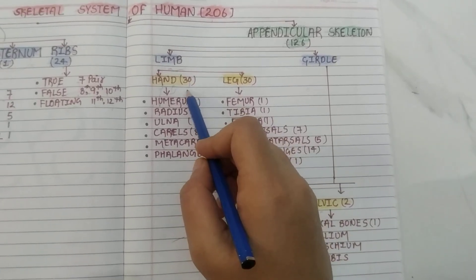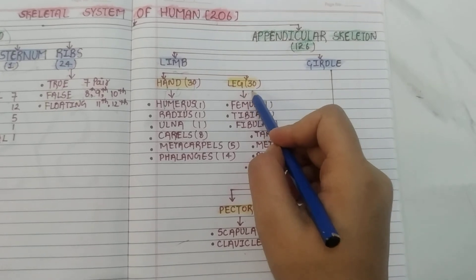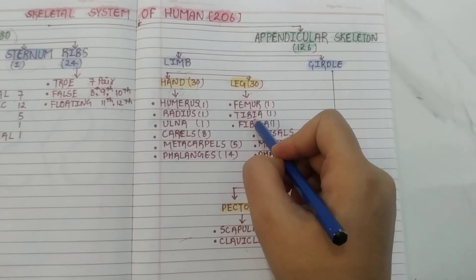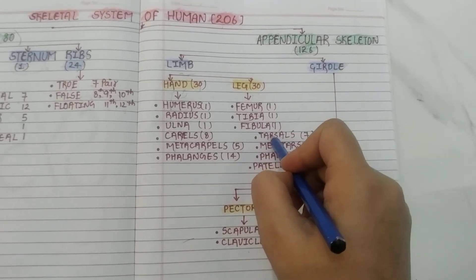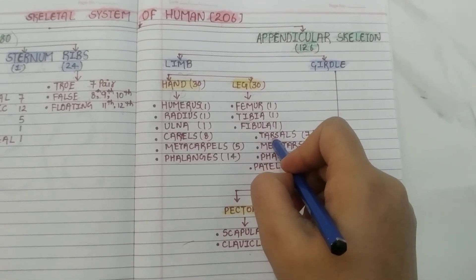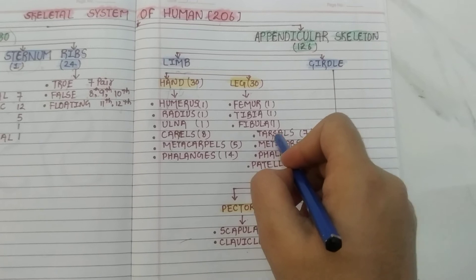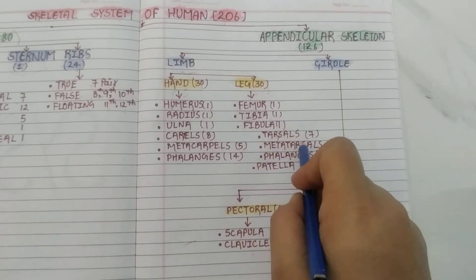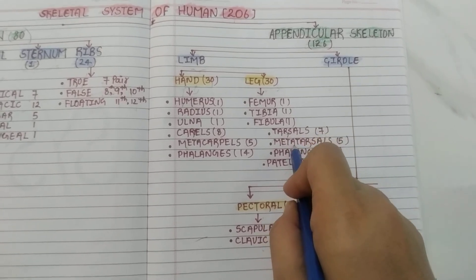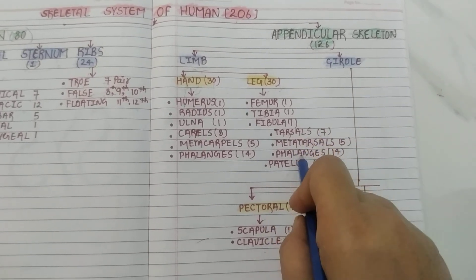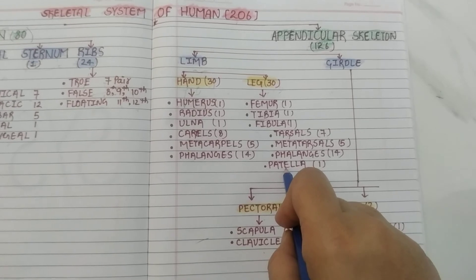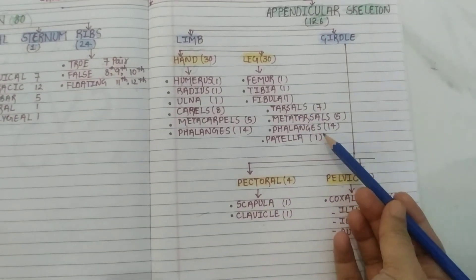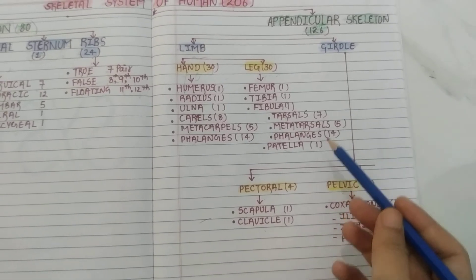For the legs, each leg includes: femur (1) — which is the strongest and longest bone of the body — tibia (1), fibula (1), tarsals (7), metatarsals (5), and phalanges (14). That gives 29 bones, but with the patella (kneecap) added, it becomes 30 bones per leg. With both legs, there are 60 bones, and two patellas total.